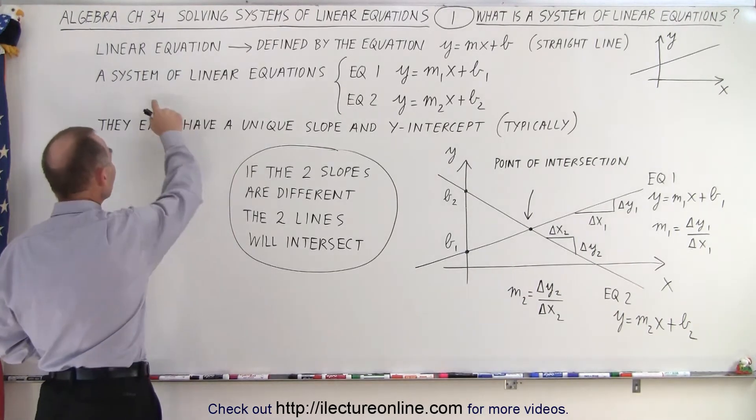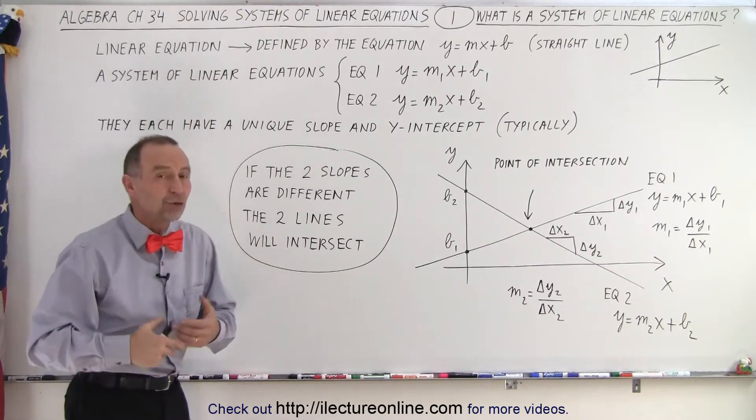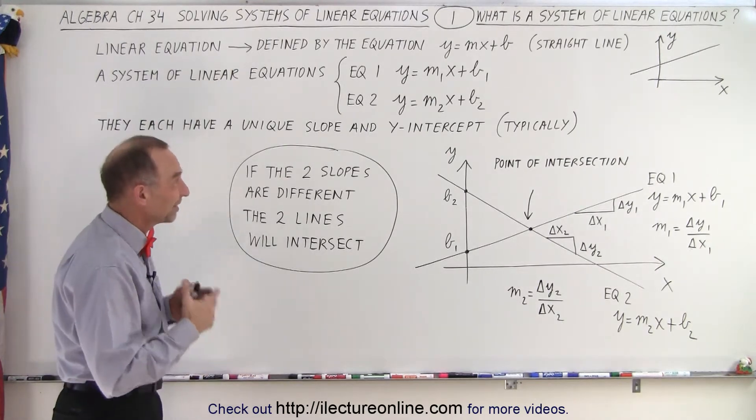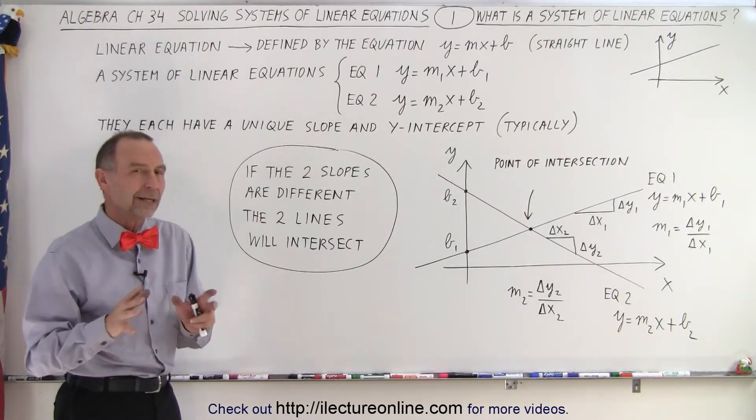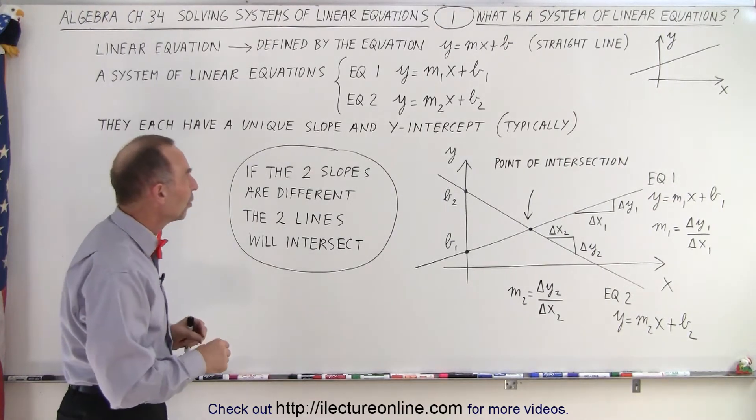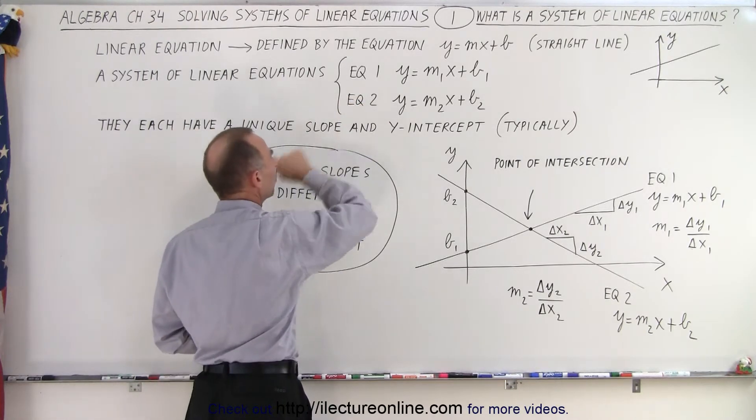If we now have a system of linear equations, that means we have two or more of them. So for example, typically we're going to deal with two. We might deal with a third or a fourth, but that's something for later. Right now, we'll just deal with two. So we have equation one and we have equation two.